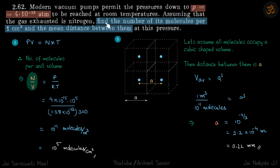In the first part, since we need the number of molecules, we'll write our gas equation in the form PV = nkT, where n is the total number of molecules.